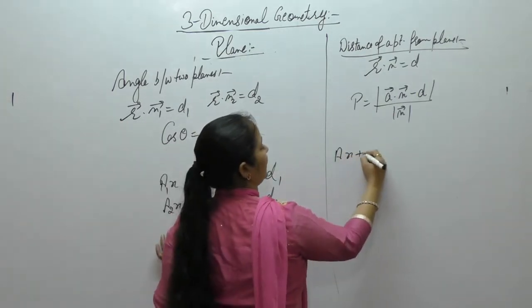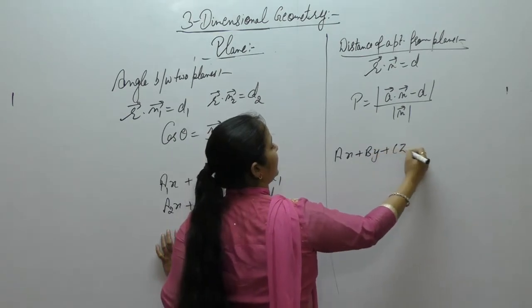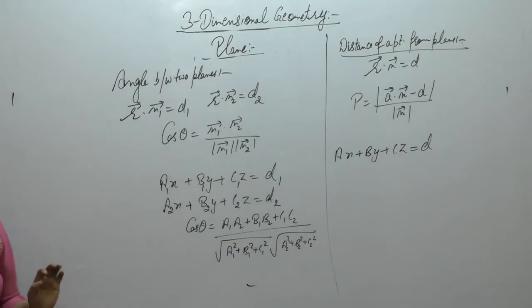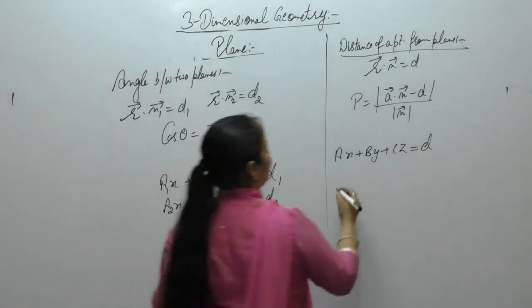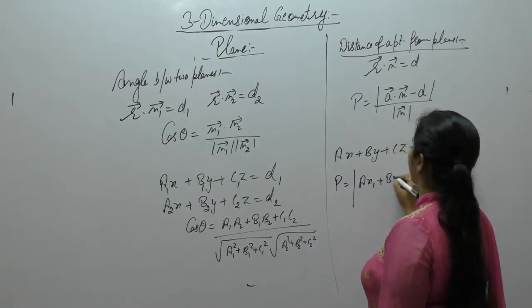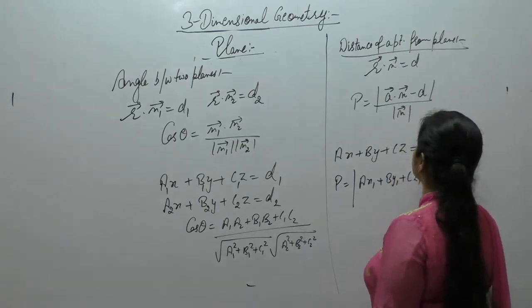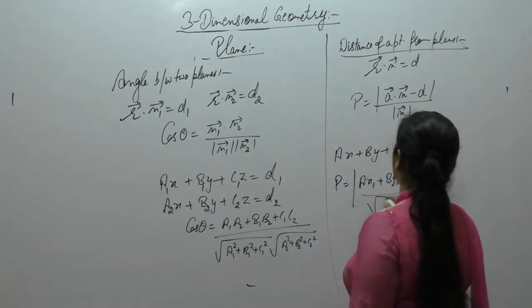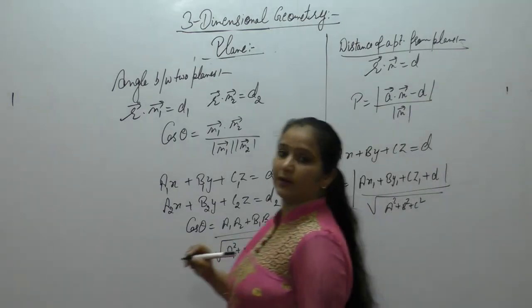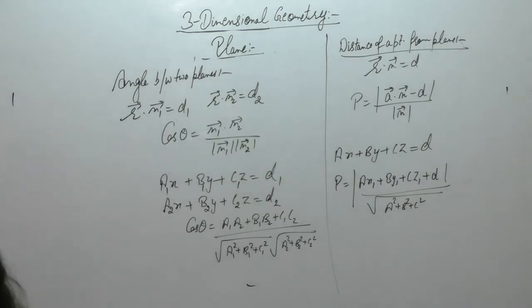And if we have Cartesian form, ax plus by plus cz is equal to d, and the point passes through x1, y1, z1, then the distance will be equal to a into x1, b into y1, c into z1, plus d upon square root of a square, b square, c square.